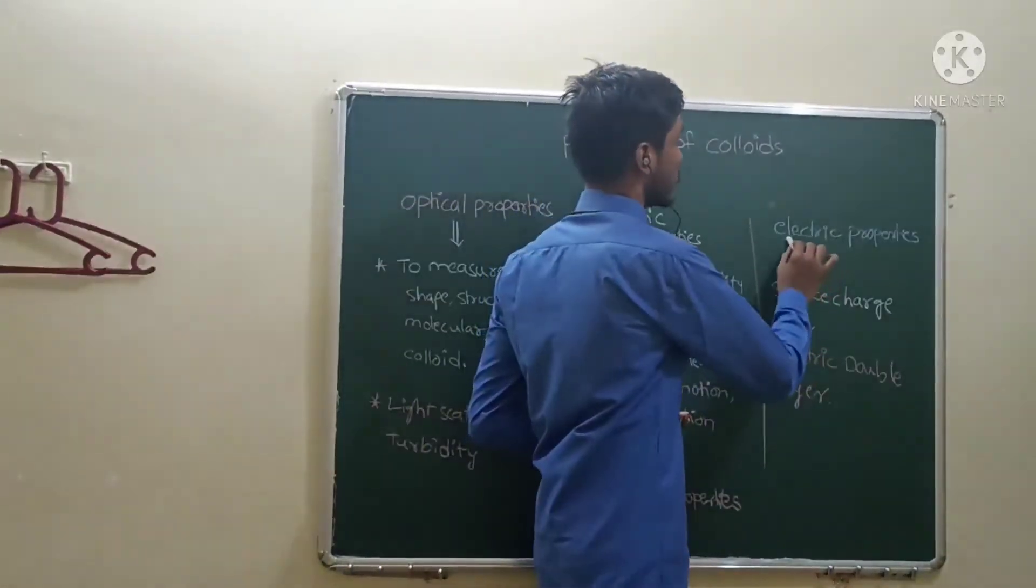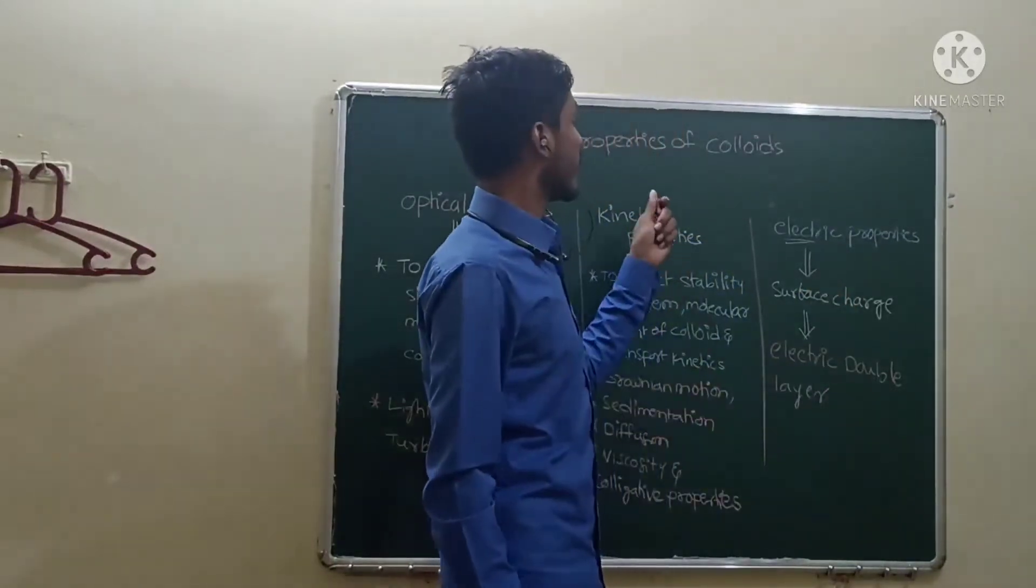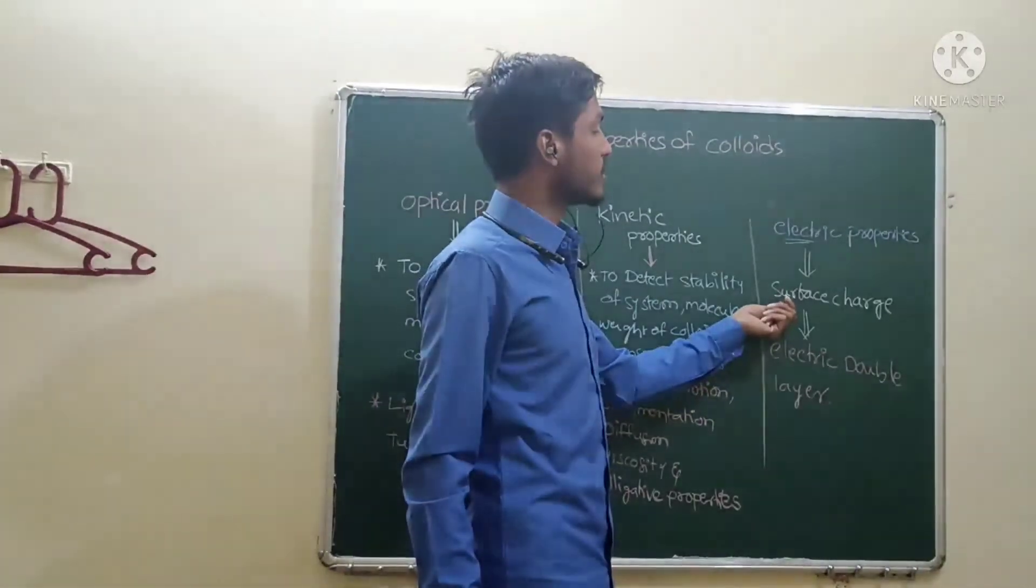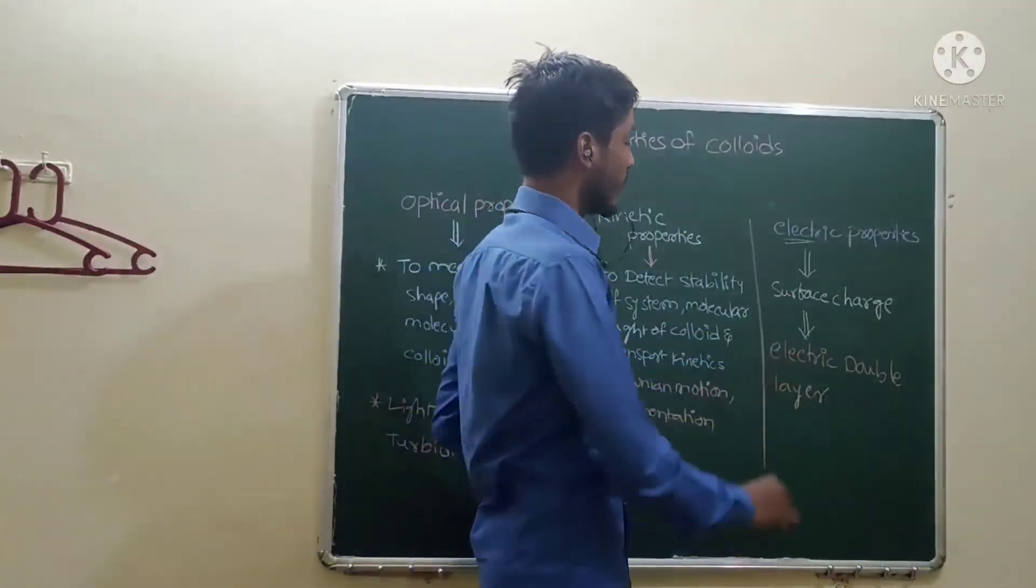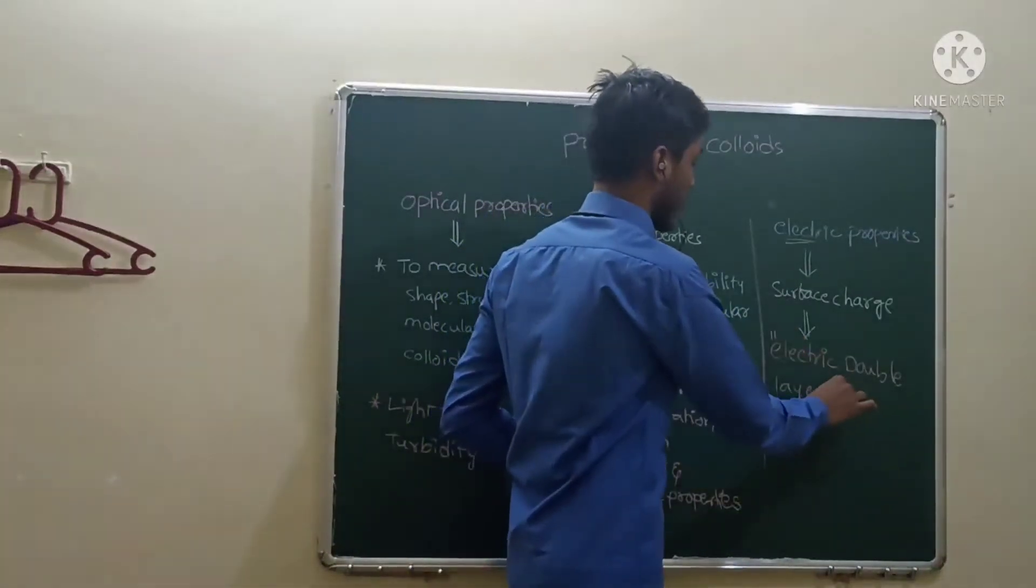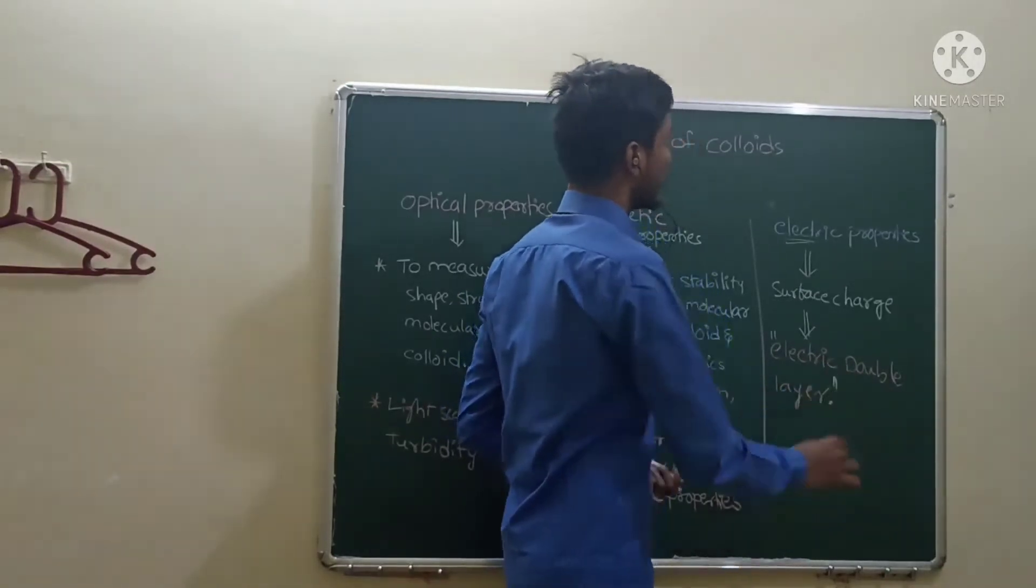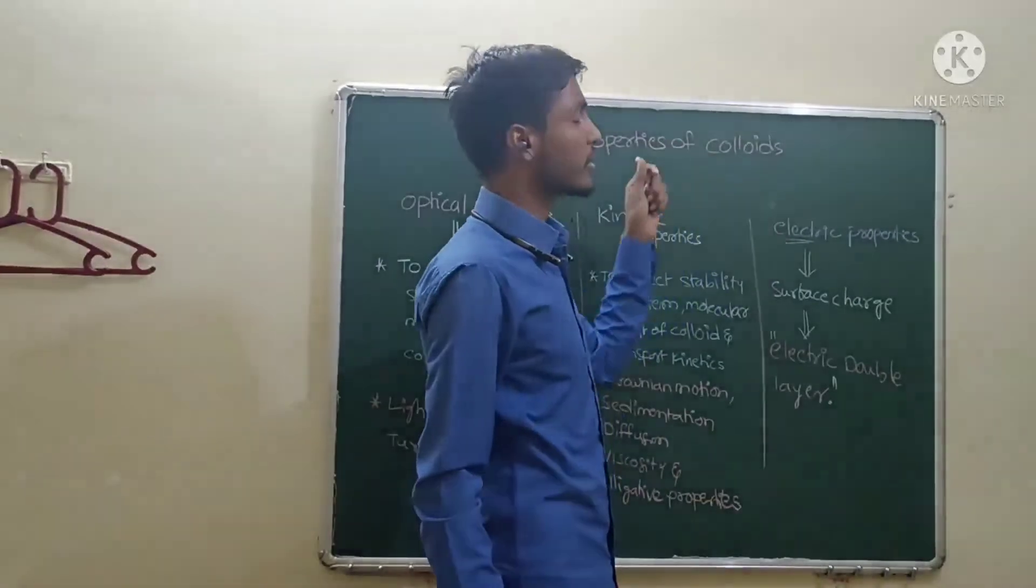Next one is electrical properties. What are the electrical properties of the colloids? The surface charge. This will mainly be used to the surface charge. This is an electrical double layer. Electric double layer can be explained by using electrical properties of the colloids.